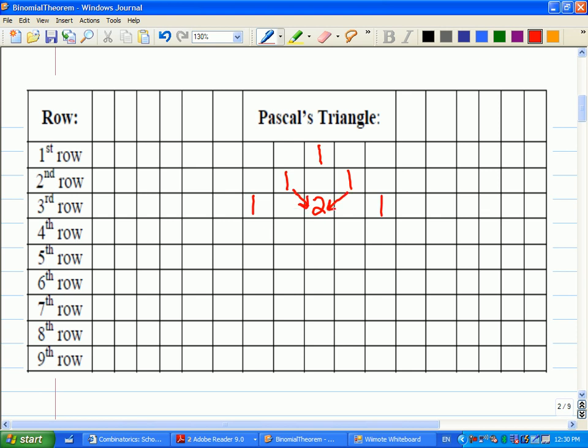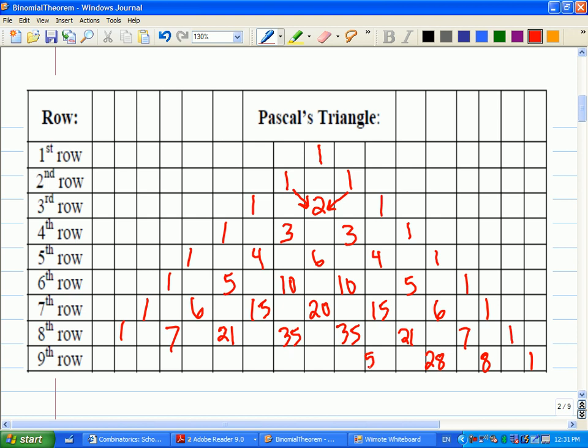So, for example, 1 plus 1 gives me 2. And if I keep going, there would be a 3 there. 1, 4, 6, 4, 1. And 1, 5, 10, 10, 5, 1. 6, 15, 20. And I've got 2 more rows to go. I think I'll make it 21, 35, 35, 21, 7, 1. Okay, last one, 8, 28, 56, 70, 56, 28, 8, 1. Okay, so again, the way you construct it is you take the 2 numbers above and they add up to that number. So anywhere in this table, the 2 numbers above give me the next one in the row below.